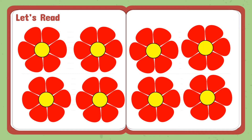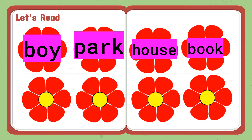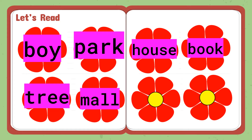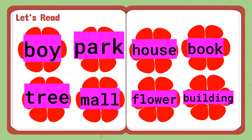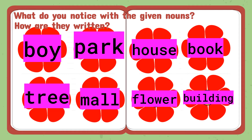Let us read: boy, park, house, book, tree, mall, flower, building. What do you notice with the given nouns? How are they written? Look at the beginning letter of the following nouns — it begins with a small letter. What do we call them? We call them common nouns.